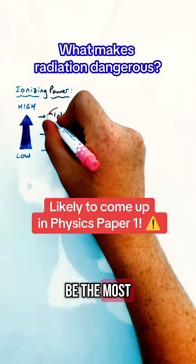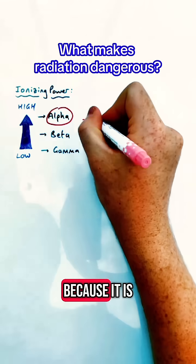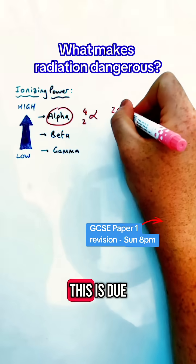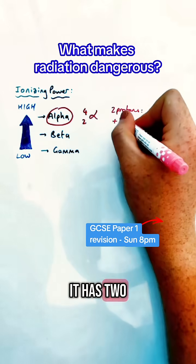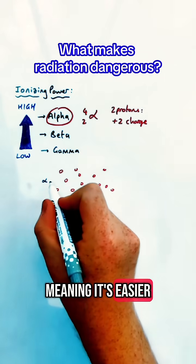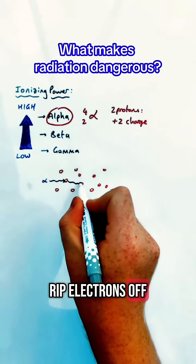Alpha radiation can be considered to be the most dangerous out of the three because it is the most ionizing or has the highest ionizing power. This is due to its charge. It has two protons in an alpha particle, so it has a charge of plus two, meaning it's easier for it to rip electrons off nearby atoms.